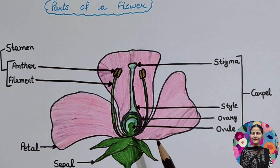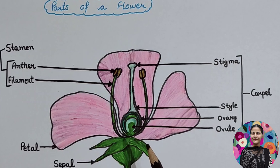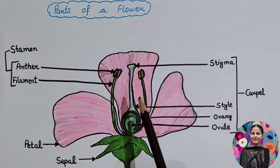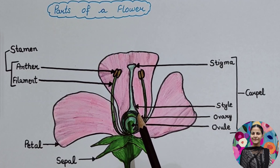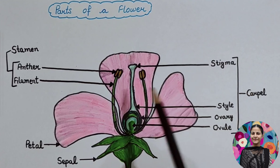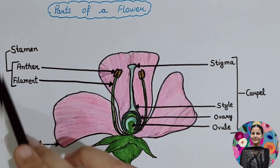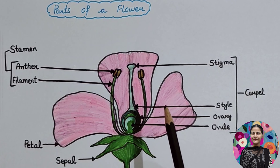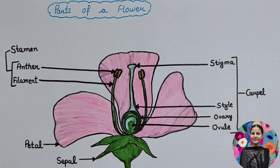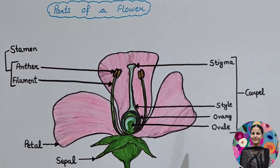When a flower contains both male reproductive parts and female reproductive parts, it is called bisexual. When the flower has only one reproductive part — either carpel or stamen — it is called unisexual. An example of a bisexual flower is hibiscus.